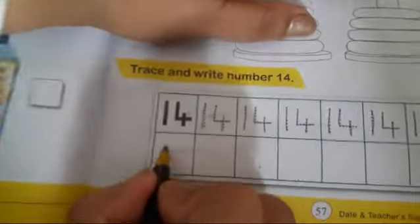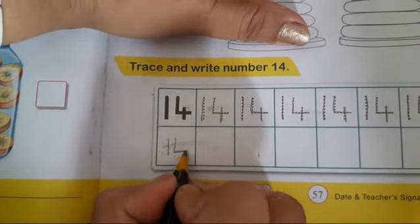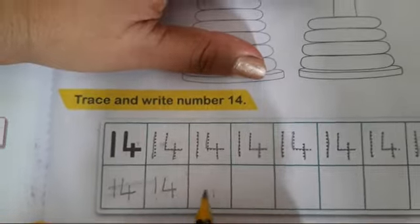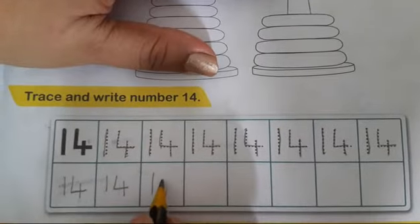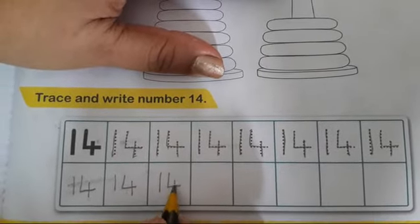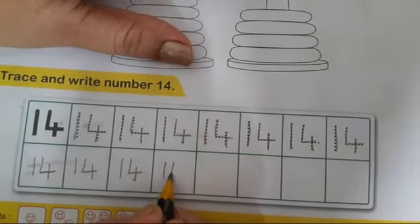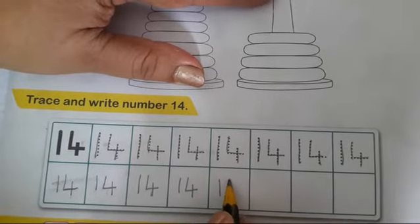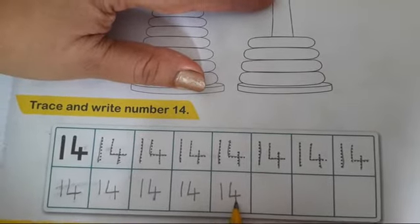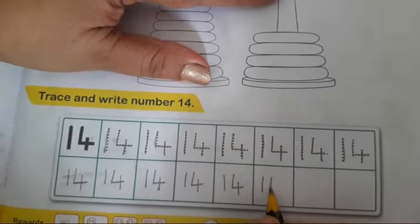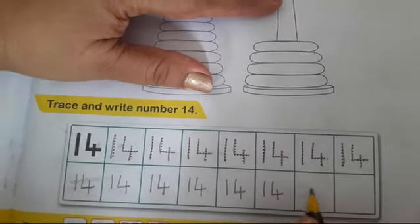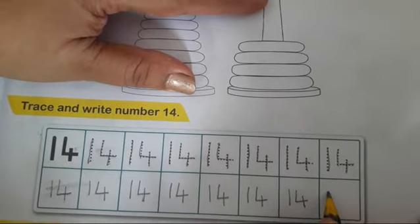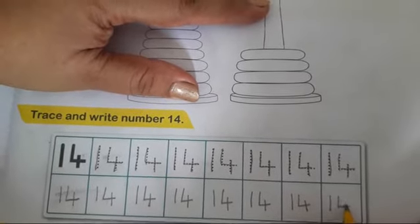1, 4, 14. First you write number 1. And after you write number 4. 1, 4, 14. 1, 4, 14. 1, 4, 14. Okay. Very good.